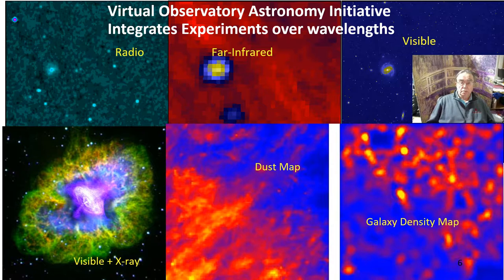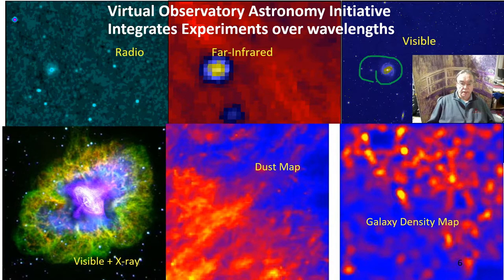Here's some multi-wavelength astronomy. The same region of the sky is taken in different wavelengths — far infrared, radio, visible, x-ray, dust map, galaxy. You get dust maps and galaxy density maps. The prettiest is probably the visible image where you can see a beautiful galaxy, but looking in different wavelengths yields different scientific information and would require higher resolution data.